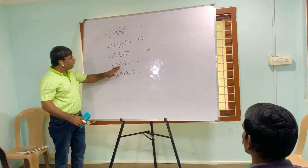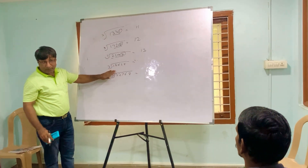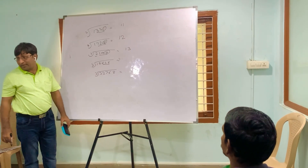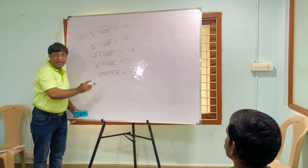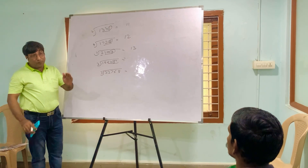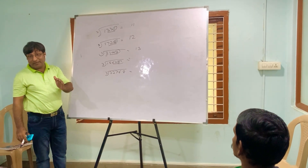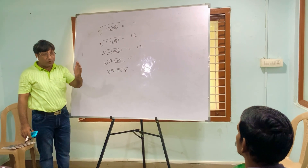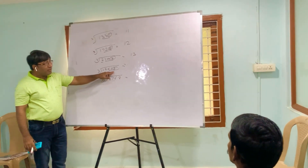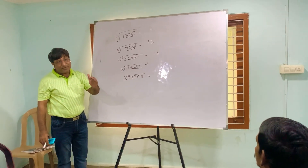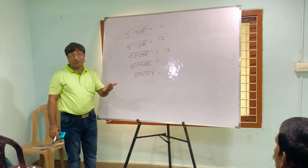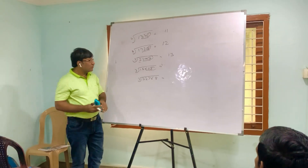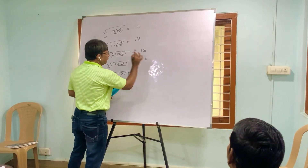For the 5-digit number 15625, no problem — just make a group of 3 from the right: 625. The unit digit is 5. If you multiply 5 any number of times, you always get unit digit 5. So write 5 as the unit digit.